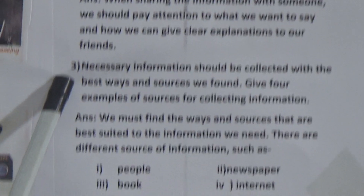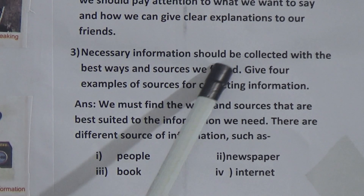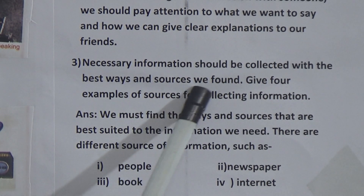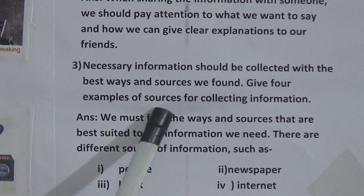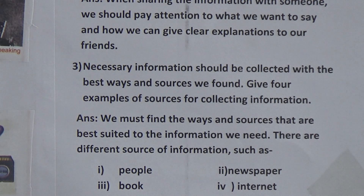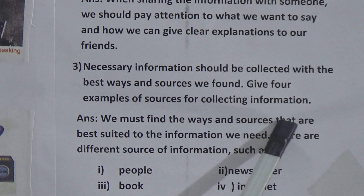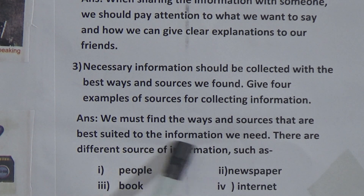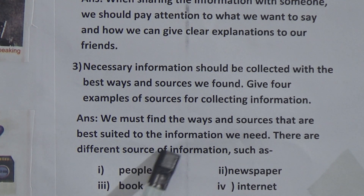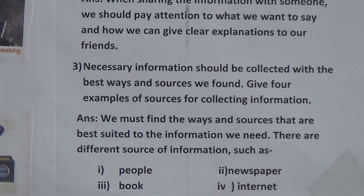Last, short question number three: necessary information should be collected in the best way and from the best sources — give four examples of sources for collecting information. Answer: we must find the ways and sources that are best suited to the information we need. There are different sources of information such as people, newspaper, book, and internet.